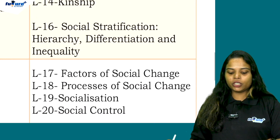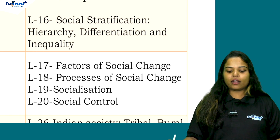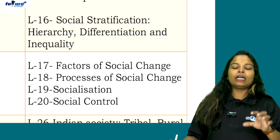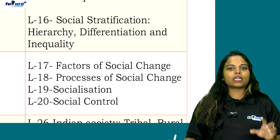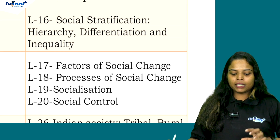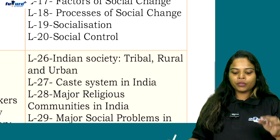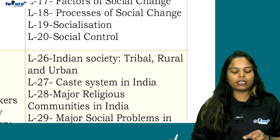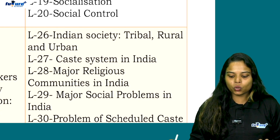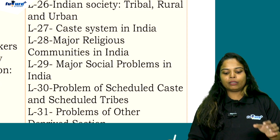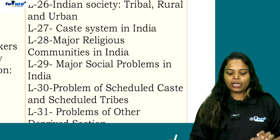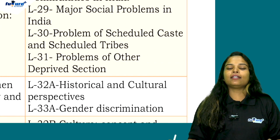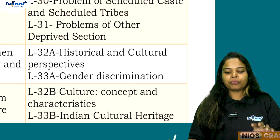Chapter 7 is Factors of Social Change. Chapter 7 also covers the Process of Social Change and Socialization. Chapter 6 is Social Control — this is a public examination chapter. Chapter 6 is Indian Society. Chapter 8 is Caste System. Chapter 8 is Major Religious Communities in India. Chapter 9 is Major Social Problems in India. Chapter 3 is Problems of Scheduled Castes and Scheduled Tribes. Chapter 9 is Historical and Cultural Perspective, and Major Discrimination.